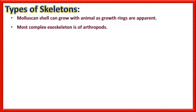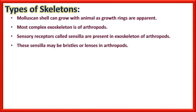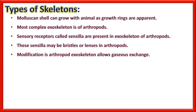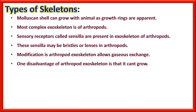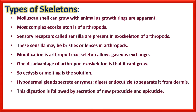The most complex exoskeleton belongs to arthropods. Sensory receptors called sensilla are present in the exoskeleton of arthropods, which may be in the form of bristles or lenses as present in the eyes. Modifications in arthropod exoskeleton allow gaseous exchange. One disadvantage of arthropod exoskeleton is that it cannot grow, so ecdysis or molting is the solution. Hypodermal glands secrete an enzyme in the first stage of ecdysis which digests the endocuticle. The hormone ecdysone controls all this.